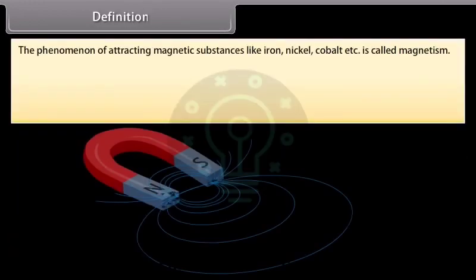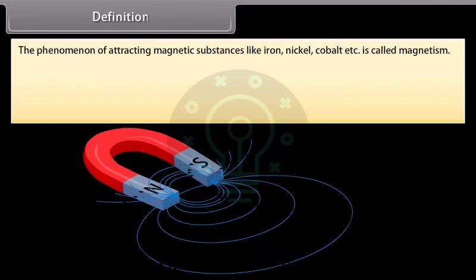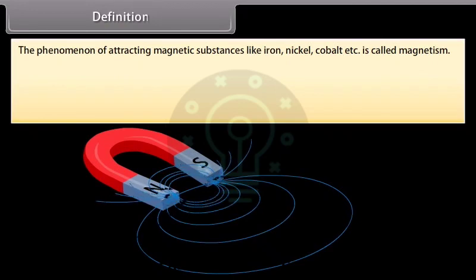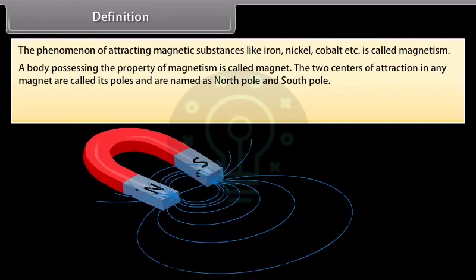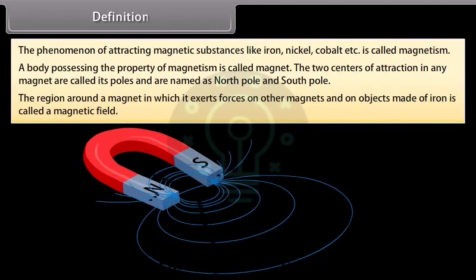Definition: The phenomenon of attracting magnetic substances like iron, nickel, cobalt, etc. is called magnetism. A body possessing the property of magnetism is called a magnet. The two centers of attraction in any magnet are called its poles, and are named as north pole and south pole. The region around a magnet in which it exerts forces on other magnets and on objects made of iron is called a magnetic field.